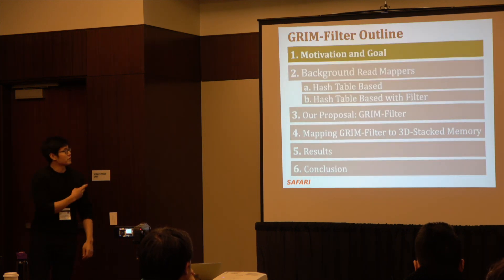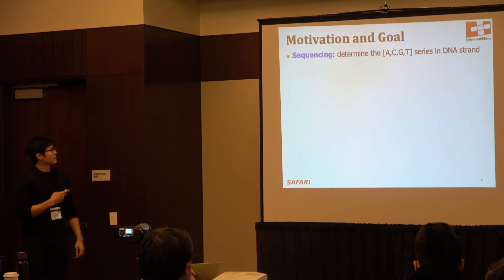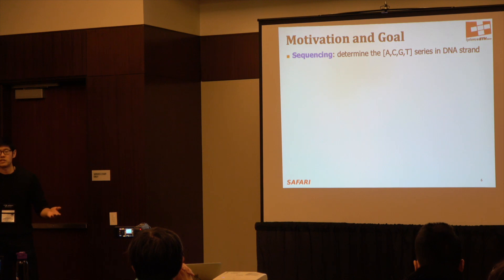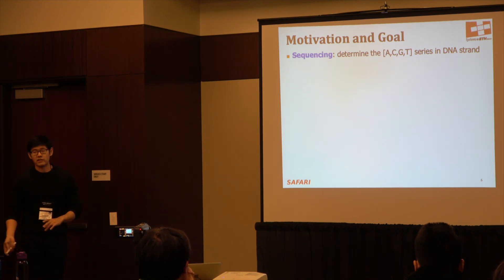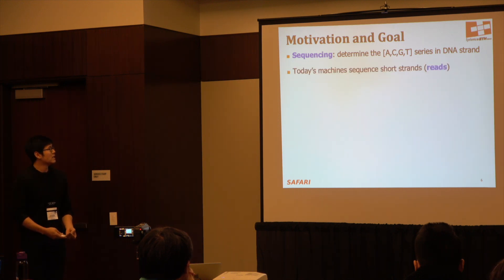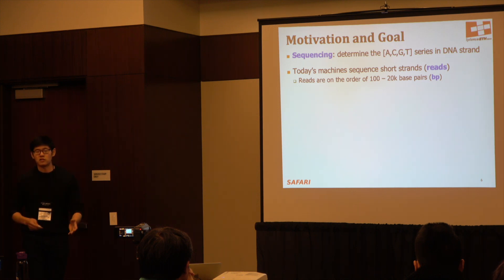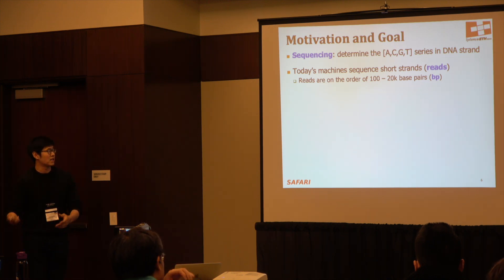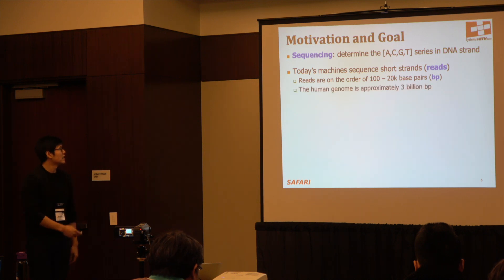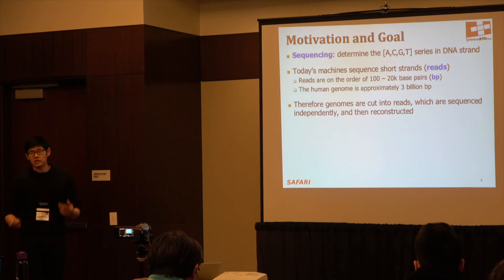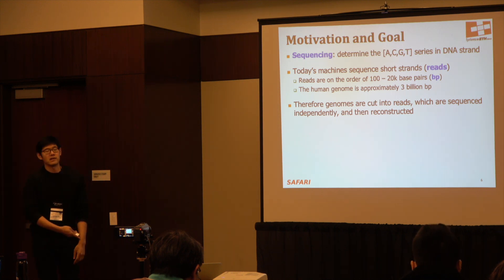Moving to motivation and goal: sequencing is the process of determining the series of nucleotides within a DNA strand, and there are four possible nucleotides referred to as A, C, G, and T. Today's machines can only sequence smaller strands, which we call reads, and reads are on the order of 100 base pairs to 20k or 100k base pairs nowadays. The human genome is approximately 3 billion base pairs, so we need to cut these genomes into smaller reads which are independently sequenced and then reconstructed.